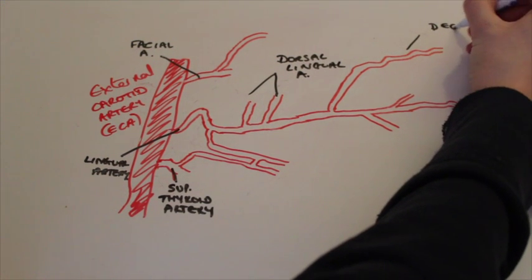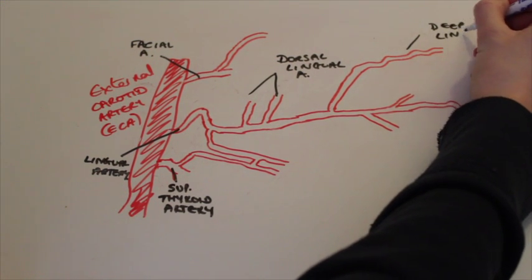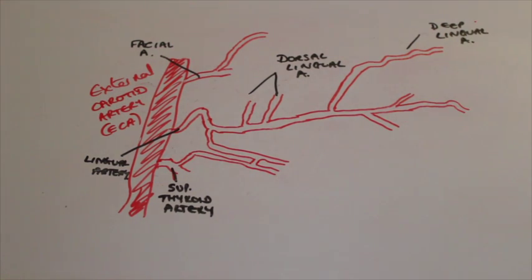Another important branch that comes off the lingual artery is the deep lingual artery. It supplies the body and the apex of the tongue.